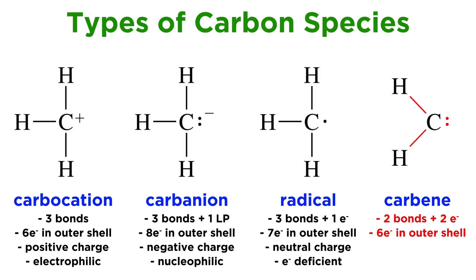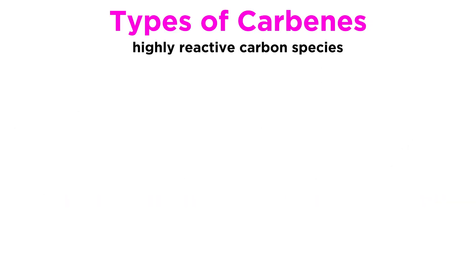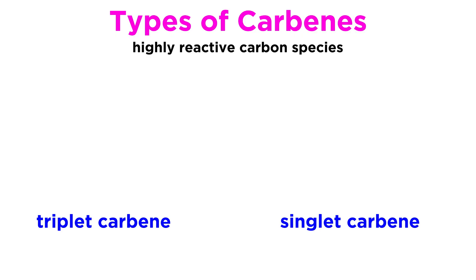and that is the carbene. Carbenes, like carbocations, have only six electrons in their outermost shell, but in the form of two covalent bonds and two additional electrons. Because four of these electrons belong to the carbon atom itself, the carbon is of neutral charge, though it does not possess a full octet. Carbenes tend to react with neutral partners to form two new bonds in order to achieve a full octet and stabilize. Much like carbon radicals, carbenes are very reactive, and they come in two forms: triplet carbenes and singlet carbenes.